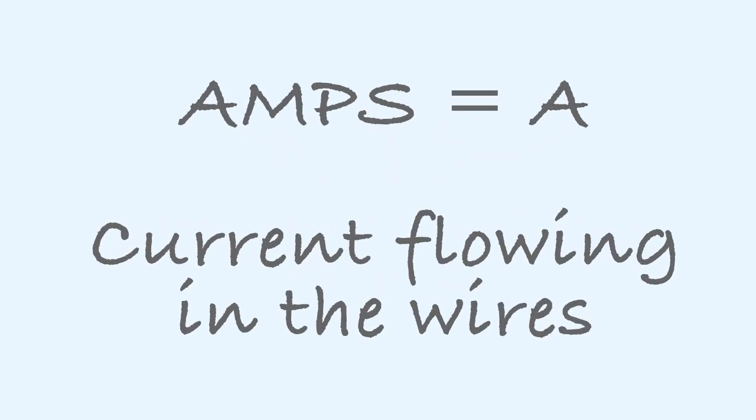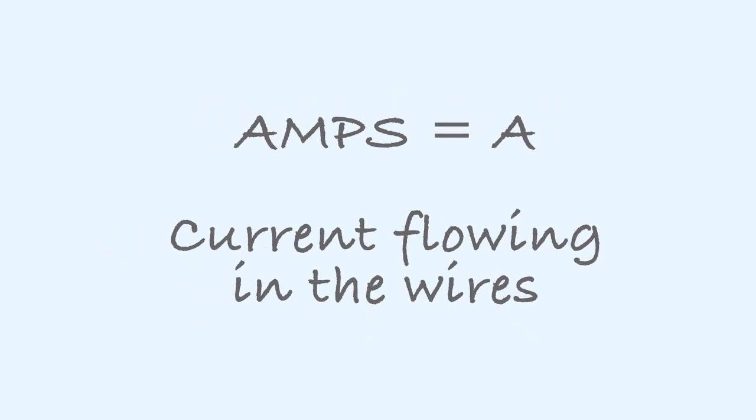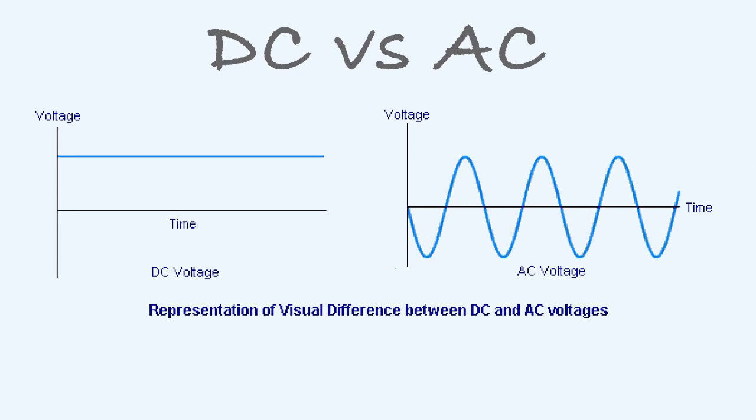Then we have amps, or A — that is the unit of current. To keep it very simple, let us say it indicates the force of the flow of electricity in the wires. Here I have to mention that there are two systems in use. One is called direct current, or DC, and that is the current produced by a battery. The current flows in one direction only — by convention from the positive red terminal to the negative black terminal.